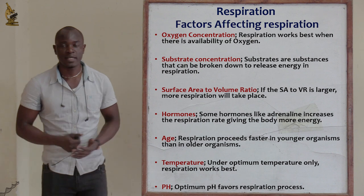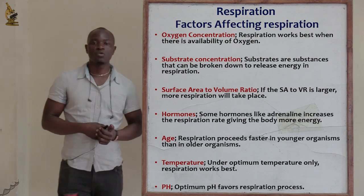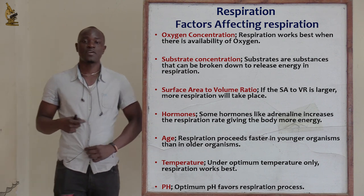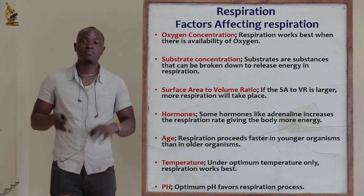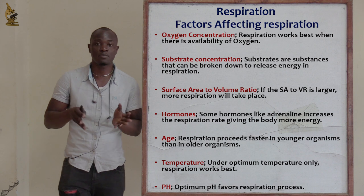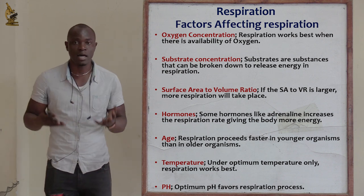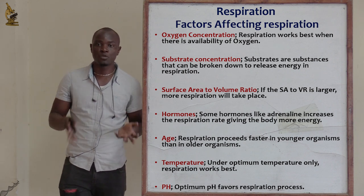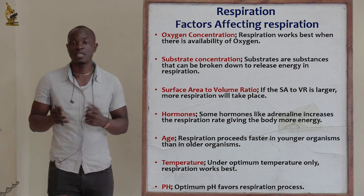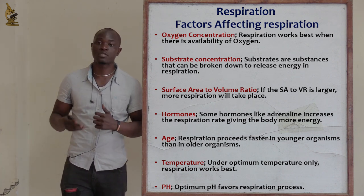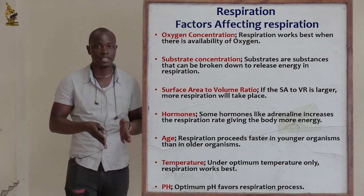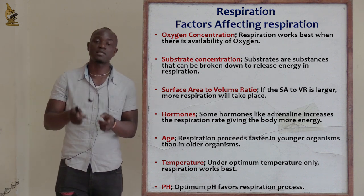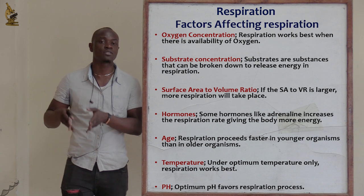Now let's look at the factors affecting respiration. The first factor is oxygen concentration. If oxygen is available, aerobic respiration takes place and a lot of energy is produced. If oxygen is not available, anaerobic respiration takes place and very low energy is produced. Respiration proceeds faster in the presence of oxygen and slower in its absence.